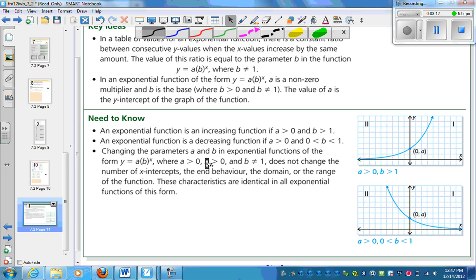In an exponential function of the form y equals ab to the x, a is a non-zero multiplier and b is the base. The value of a is the y-intercept. So guess what they're going to do? They're going to give you graphs and you're going to have to match them. And so you're going to use the fact: is it increasing or decreasing? And what's the y-intercept? That's basically what you're going to do this section. An exponential function is increasing if a is greater than zero and b is greater than 1. It is decreasing if a is greater than zero and b is a fraction between zero and one.